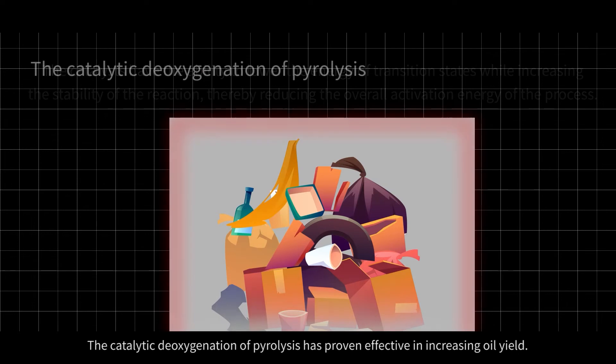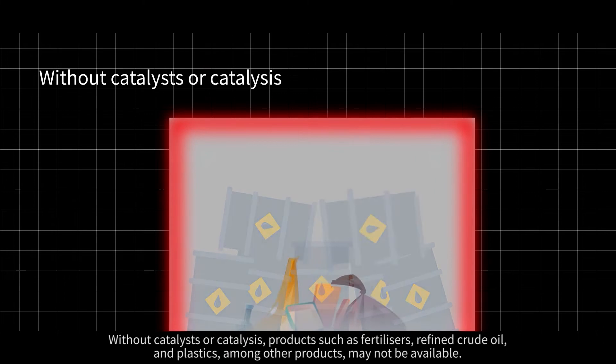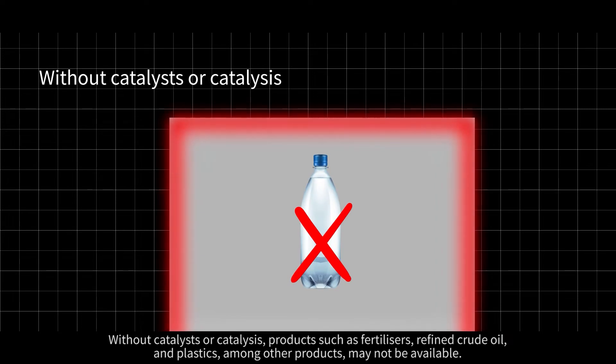The catalytic deoxygenation of pyrolysis has proven effective in increasing oil yield. Without catalysts or catalysis, products such as fertilizers, refined crude oil, and plastics, among other products, may not be available.